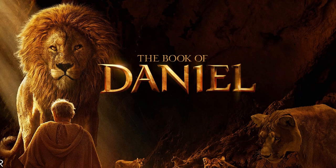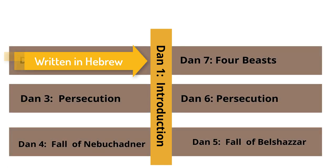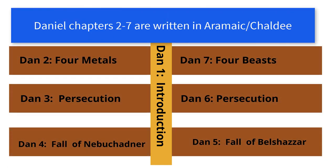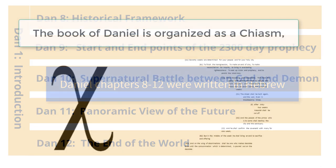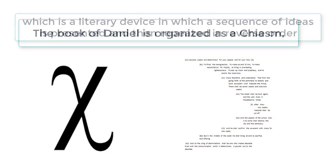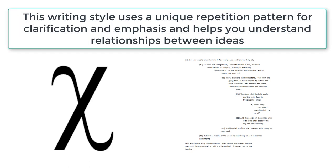The book of Daniel is composed of two major sections. Daniel chapter 1 is the introduction to the entire book. It was written in Hebrew. Daniel chapters 2 through 7 are written in Aramaic, also known as Chaldee. Daniel chapters 8 through 12 were written in Hebrew. The book of Daniel is organized as a chiasm, which is a literary device in which a sequence of ideas is presented and then repeated in reverse order. This writing style uses a unique repetition pattern for clarification and emphasis and helps you understand relationships between ideas.